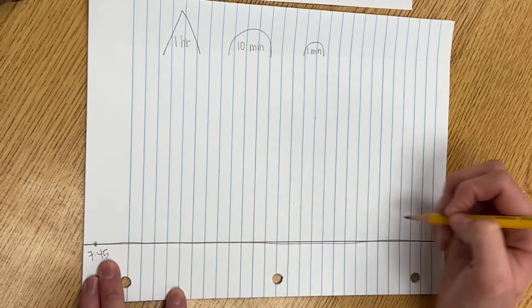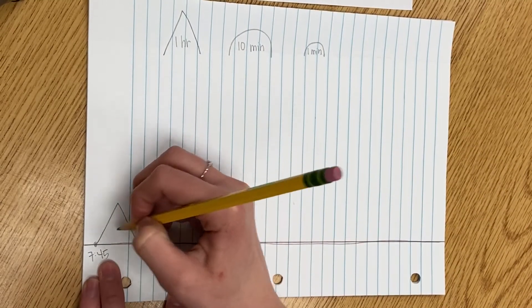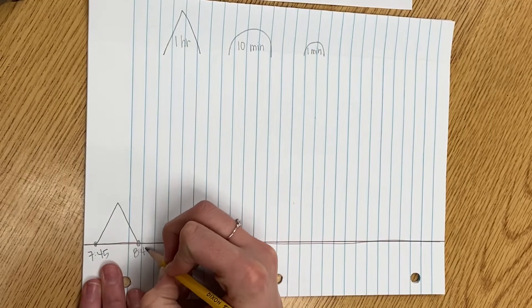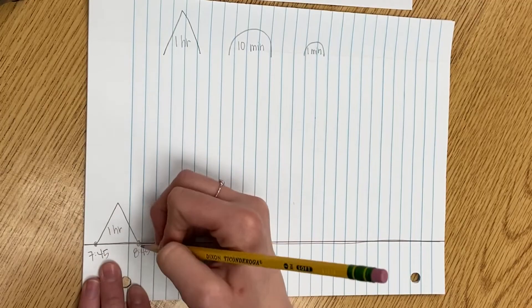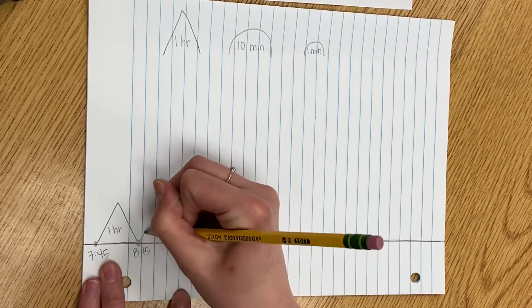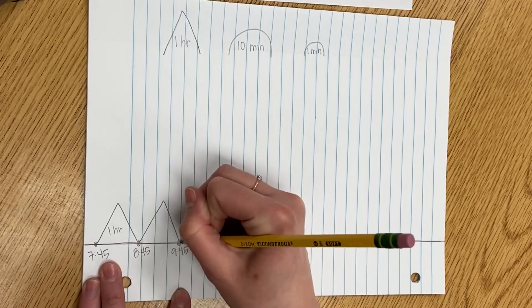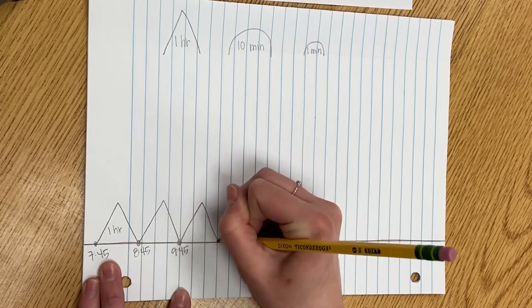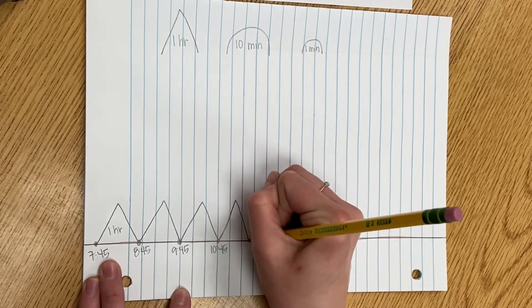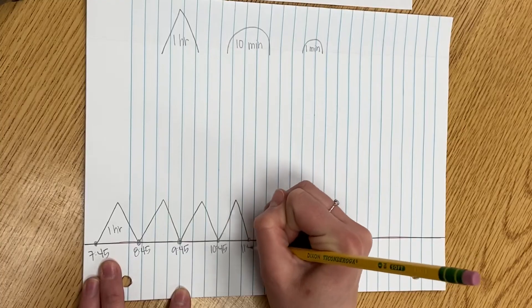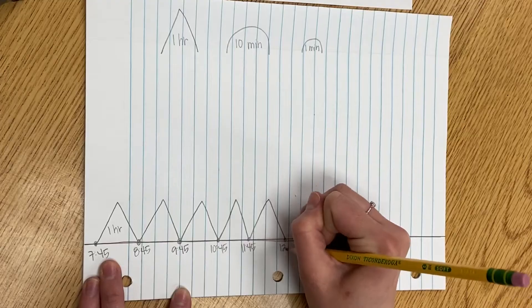I want to work from 7:45 to 1:28, and I know I can add an hour, and every time I intersect with the number line, I'm going to label my new time. 7:45 plus one hour is 8:45. I can add another hour. That'll put me at 9:45, 10:45, 11:45, 12:45.